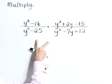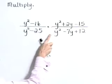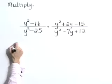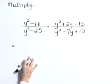Now before actually multiplying, let's factor each of these and see if we can reduce before writing that in a product form.